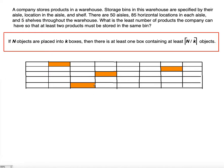Suppose this is one aisle. It says there are 85 horizontal locations, so there are 85 columns per aisle. We only drew eight here because we just don't have enough room, but there are 85 of these columns instead of eight, and we have five shelves — five rows. So to find the total number of bins in one aisle, you have to multiply 85 by 5.